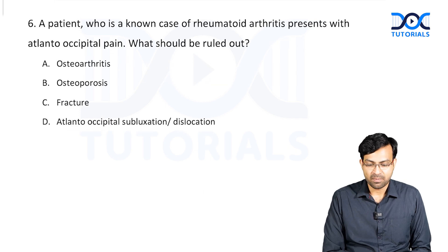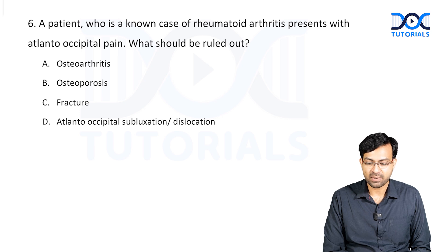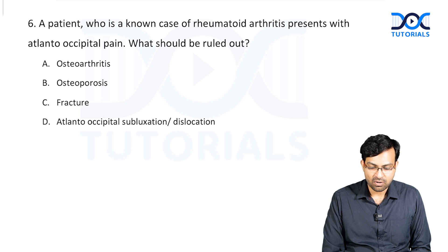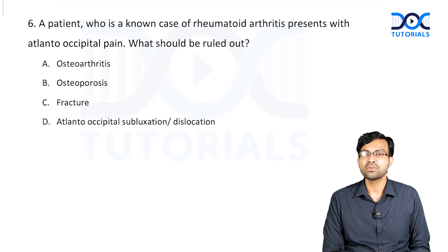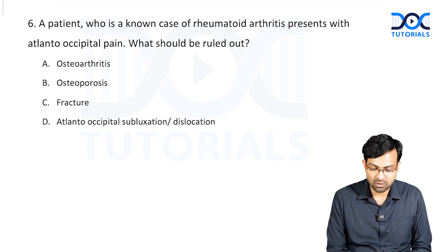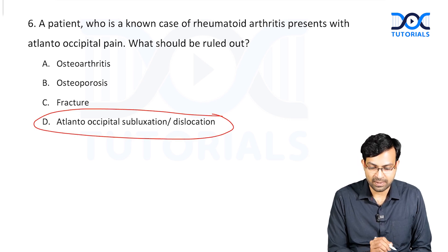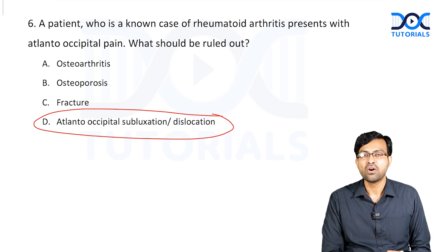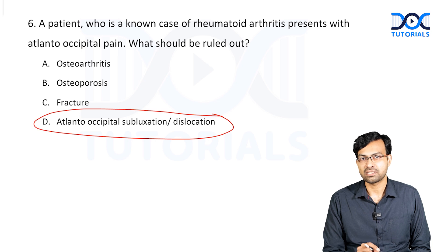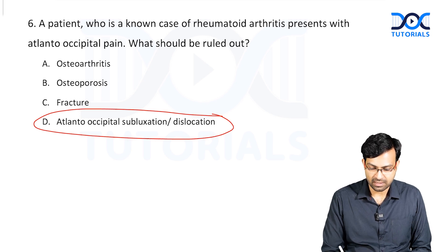Question 6: A patient who is a known case of rheumatoid arthritis presents with atlantooccipital pain. What should be ruled out? Options: osteoarthritis, osteoporosis, fracture, or atlantooccipital subluxation/dislocation? One of the most serious complications of rheumatoid arthritis is atlantooccipital dislocation or subluxation. Whenever a patient with rheumatoid arthritis presents with pain in the upper part of the neck, always rule out atlanto-axial subluxation. That is the answer.